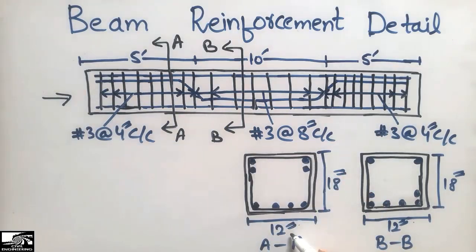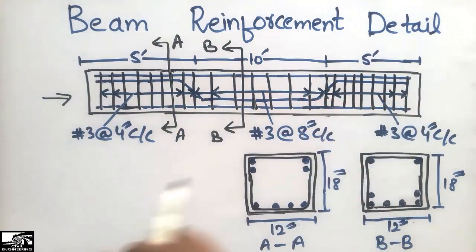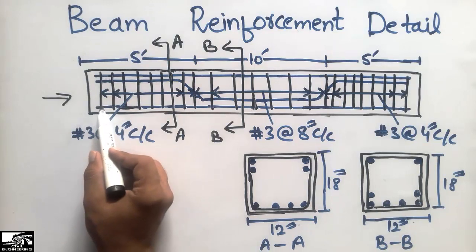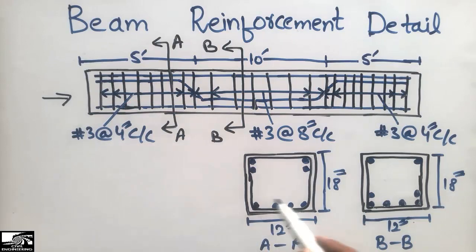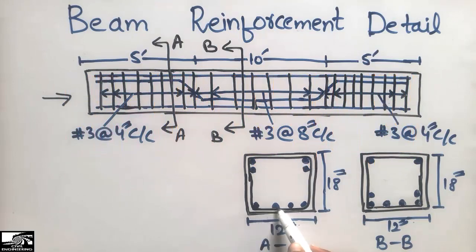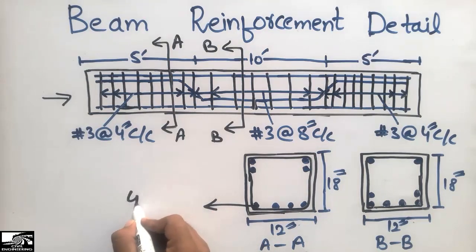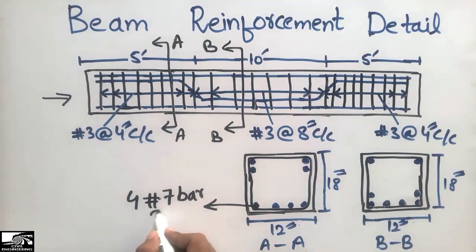The cross-section of the beam is 12 inches wide and 18 inches deep, and both sections have the same width and depth, meaning the beam has the same dimensions throughout its length. Looking at Section AA, we can see there are four bars at the bottom — 1, 2, 3, 4 — which are number 7 bars. So there are 4 number 7 bars at the bottom.